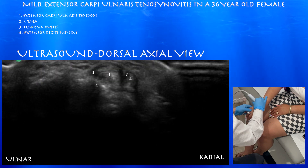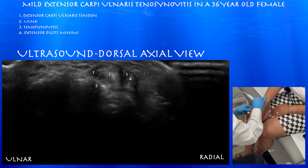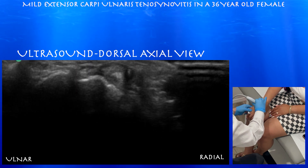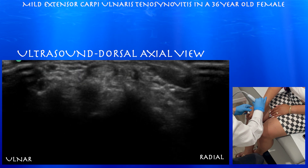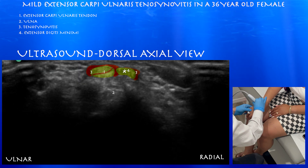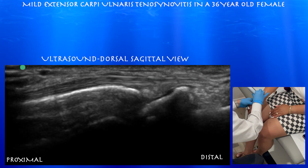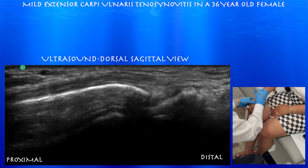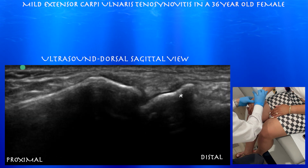Going a little bit distal, I am seeing some fluid around the extensor carpi ulnaris. Here you can see extensor digiti minimi as well, and there's a little bit of tenosynovitis around that tendon as well. Now we're looking at the extensor carpi ulnaris tendon in a sagittal plane, and you can also appreciate the triquetrum.